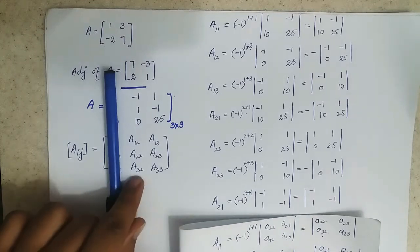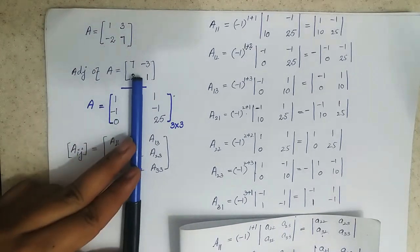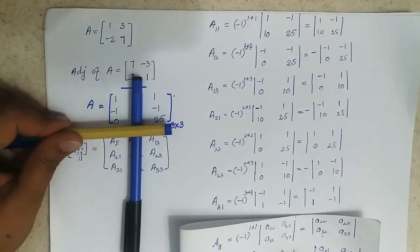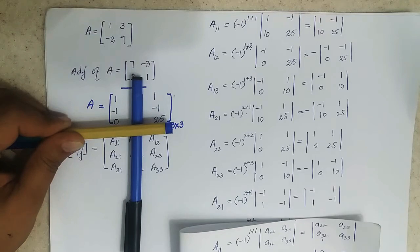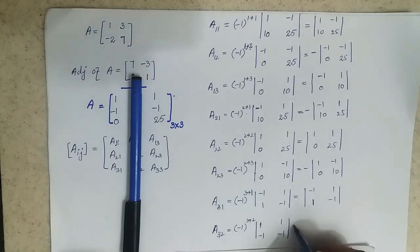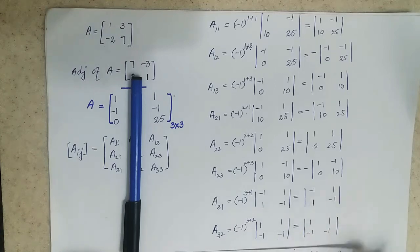For A32, this is the third row, second column element. The inside elements are 1, 1, minus 1, minus 1. The power is odd, but the outside sign will be positive — the outside sign will be positive.